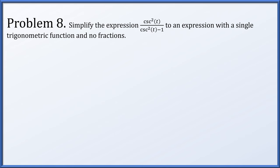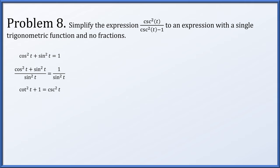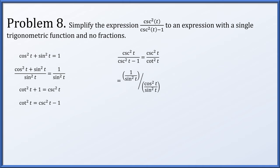Next up, we're going to simplify the expression csc²t divided by (csc²t − 1) to an expression with only one trigonometric function and no fractions remaining. Before we get to that, let's remember the standard Pythagorean identity: cos²t + sin²t = 1. If we divide both sides by sin²t and distribute on the left, we end up with cot²t + 1 = csc²t, or cot²t = csc²t − 1. That's exactly our denominator. So in our original expression, csc²t over (csc²t − 1), we replace that denominator with cot²t. Now csc²t in the numerator is 1/sin²t, and cot²t in the denominator is cos²t/sin²t. We have a shared denominator of sin²t, which we can cancel out, leaving behind just 1/cos²t, also known as sec²t.